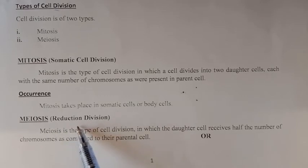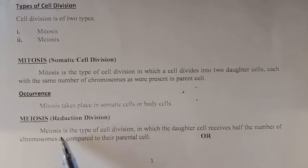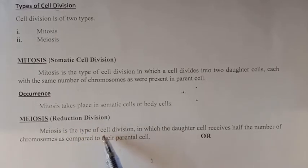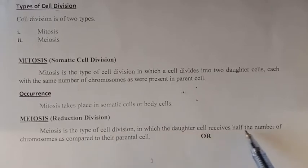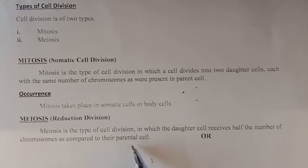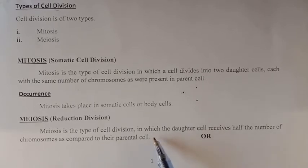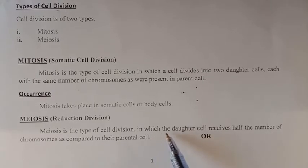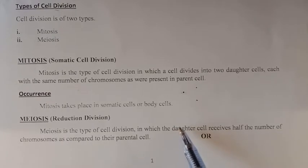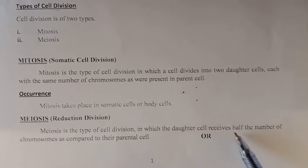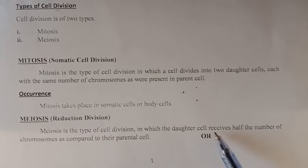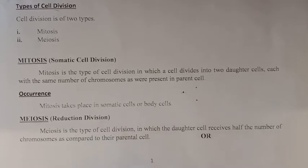Meiosis is also called reduction division, because the chromosome number is reduced. Meiosis is the type of cell division in which the daughter cells receive half the number of chromosomes compared to the parent cell. For example, if the parent testes cell contains 46 chromosomes, the daughter cells will contain 23 chromosomes — therefore it is called reduction division.